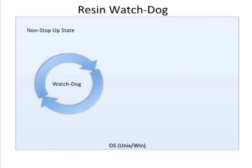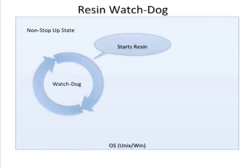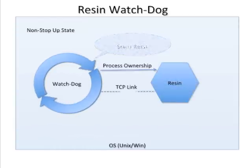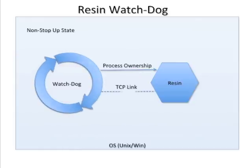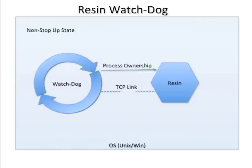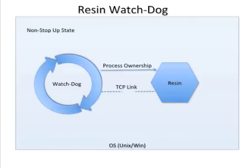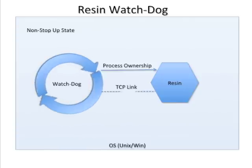Resin runs in a non-stop Resin Watchdog mode. Non-stop Resin mode differentiates Resin from the crowd of application servers. It is one of the reasons that Resin Pro is the server of choice for very large deployments and network appliances where reliability is paramount. Non-stop reliability is the difference between sleeping at night and getting support calls at 3 a.m.